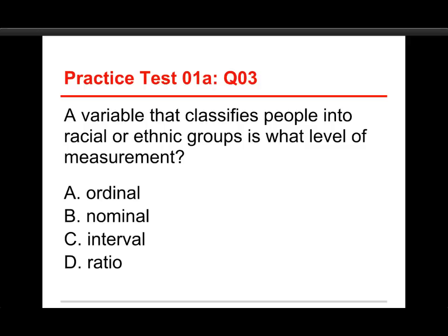Number three: a variable that classifies people into racial or ethnic groups is what level of measurement? The choices are ordinal, nominal, interval, and ratio. The answer is nominal. Nominal means names — it means different categories without specifying any order or distance between them, just that they're different.